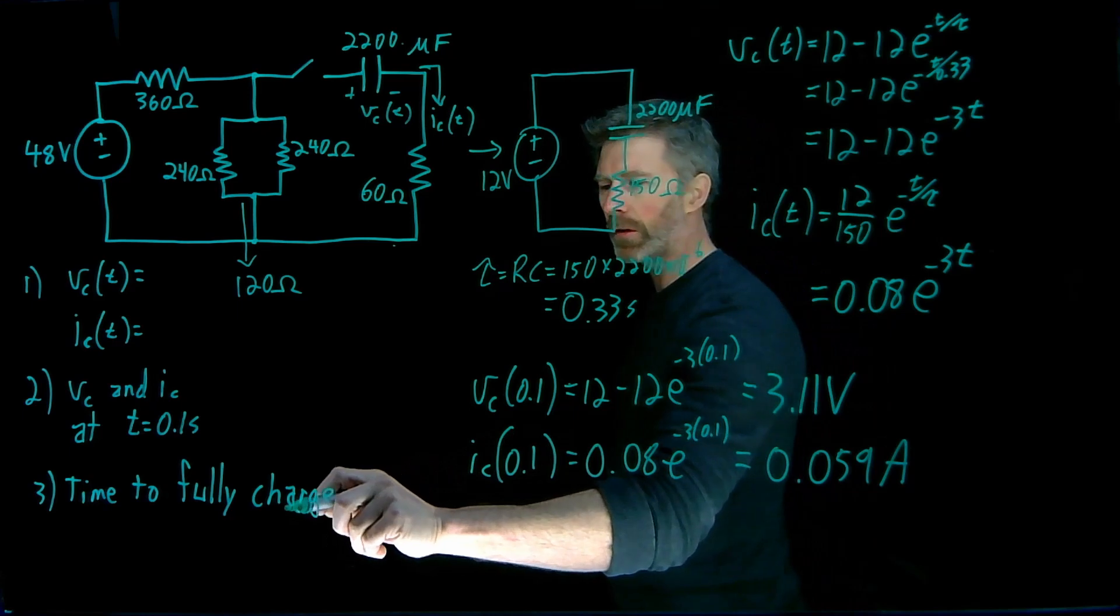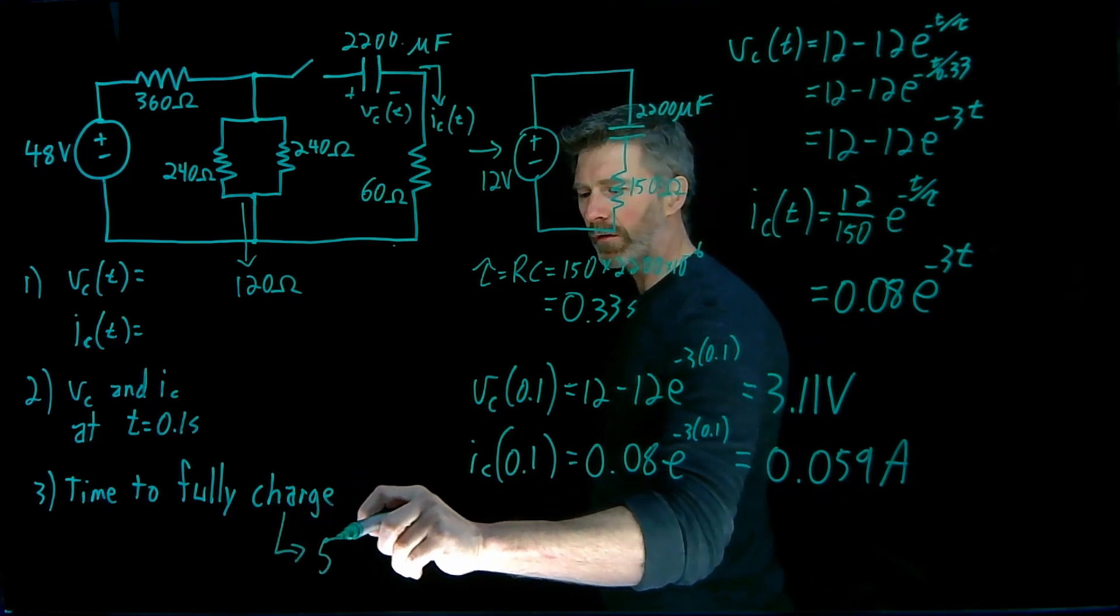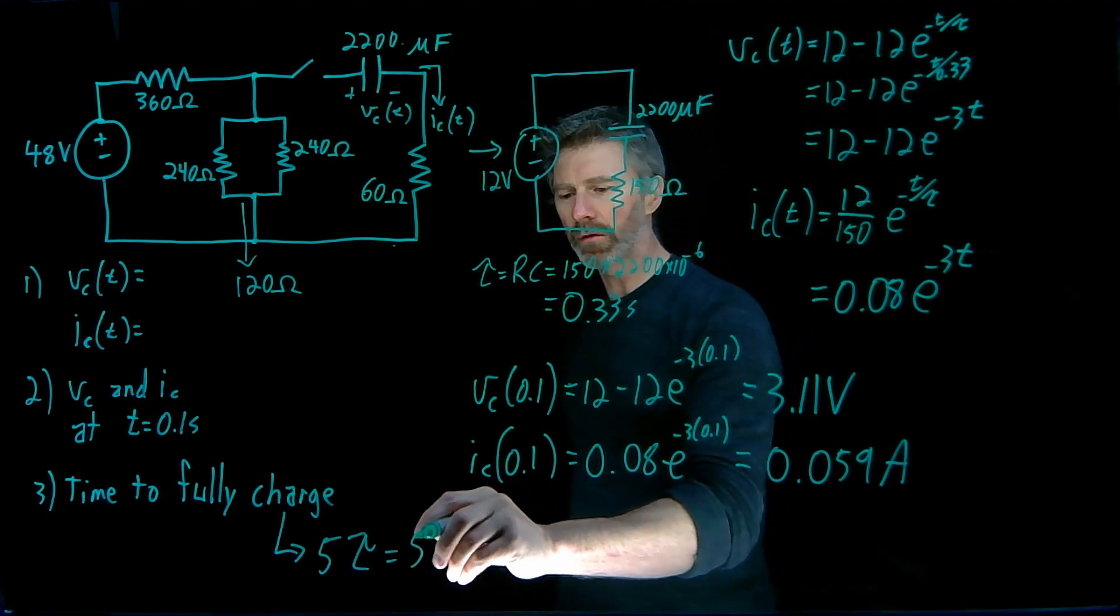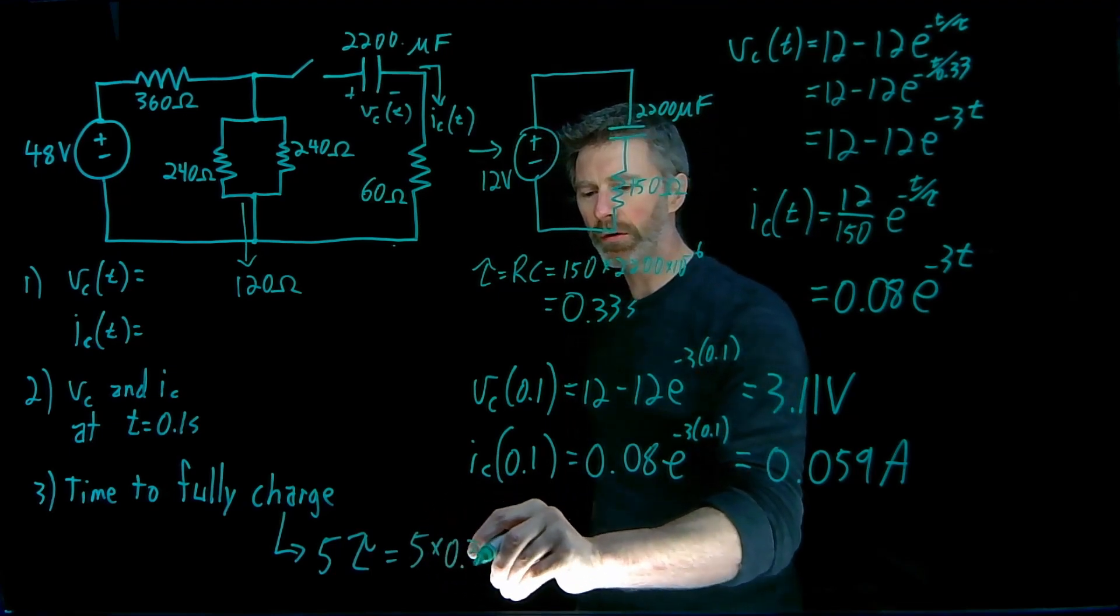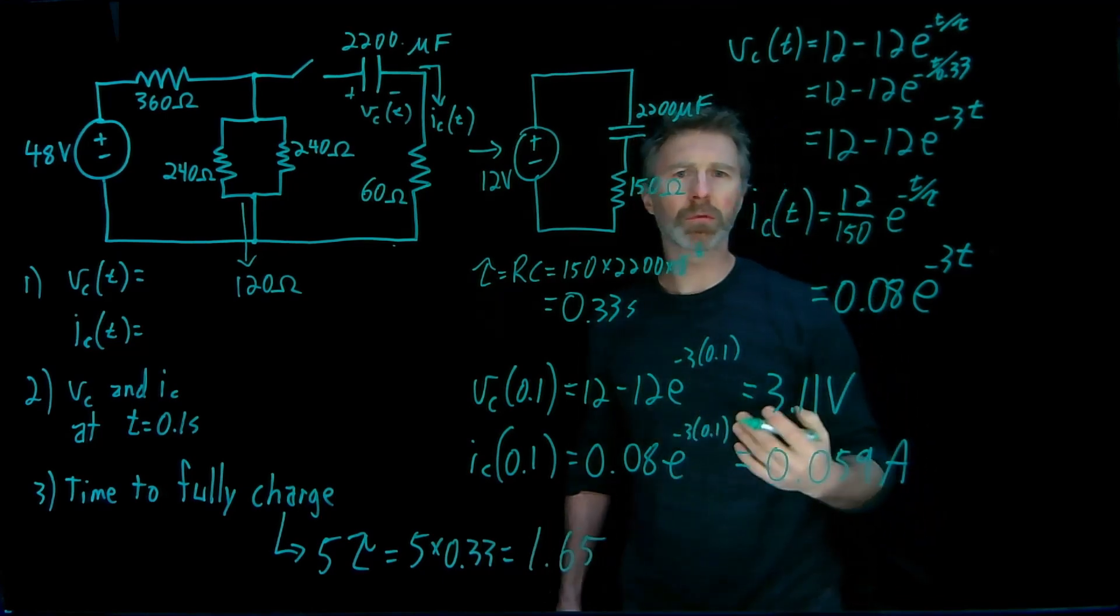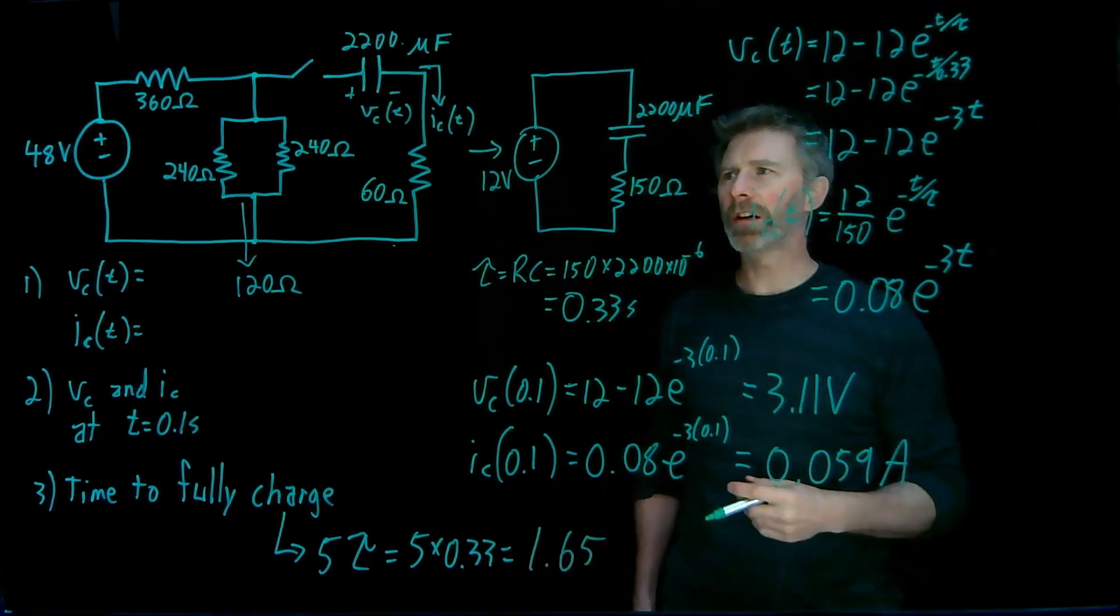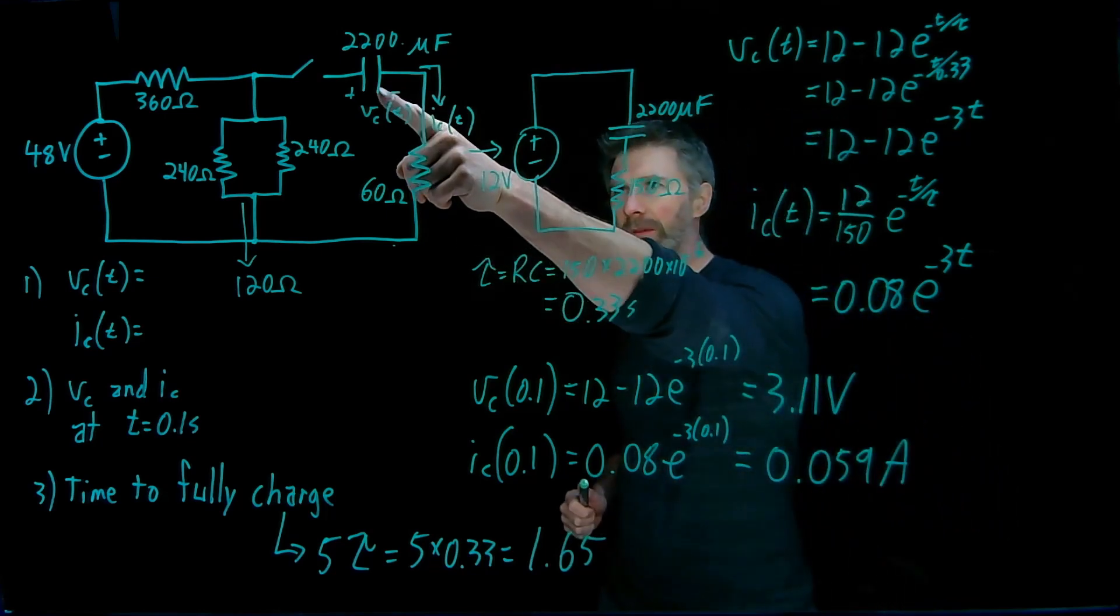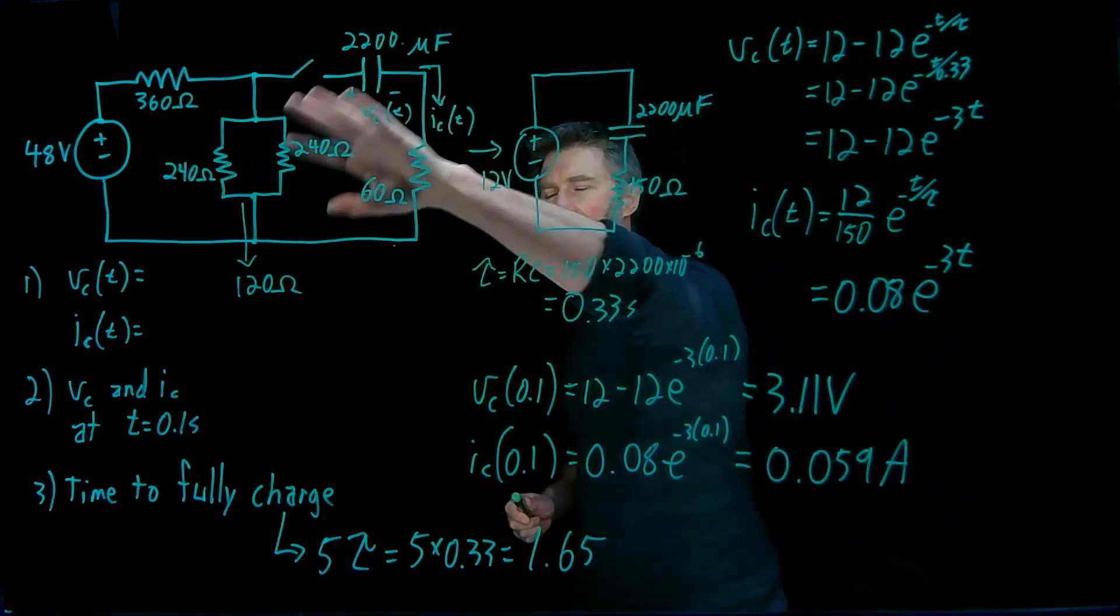The time to fully charge. Well, for any circuit, that's at 5 tau. And in this particular case, tau is 0.33 seconds. So 5 times 0.33, 1.65 seconds. So after 1.65 seconds, we can consider that this capacitor has been fully charged. Or, more accurately, this capacitor has been fully charged, because this is the actual circuit.